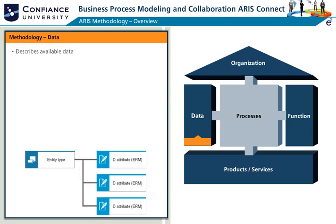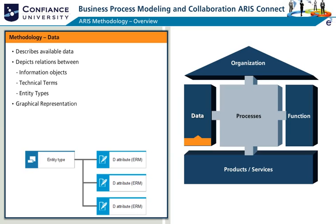The data view describes data used as inputs or outputs. It depicts relations between information objects, technical terms, entity types, and others. Some of the typically used graphical representations are the model types: technical terms model, IE data model, KPI tree, and risk diagram.